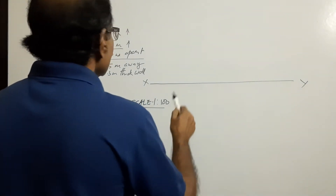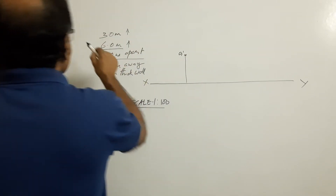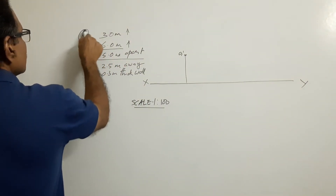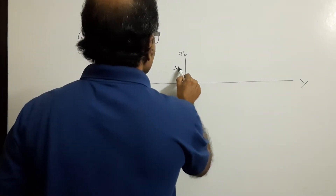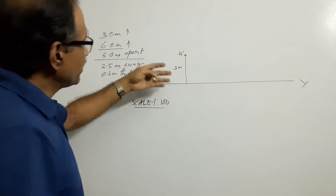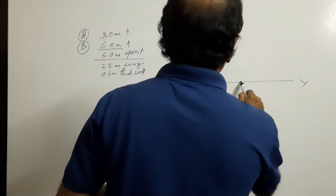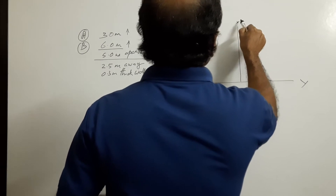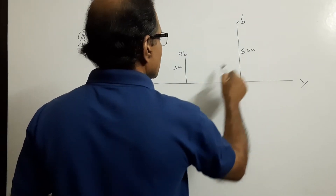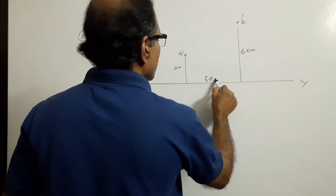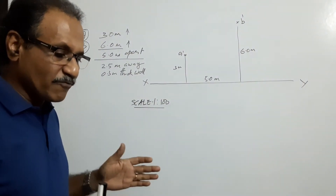I locate orange A — six meters above — and orange B, the other orange. A dash is three meters above, and I locate B dash five meters away. The elevation of orange B dash: this is five meters horizontally and six meters in height.